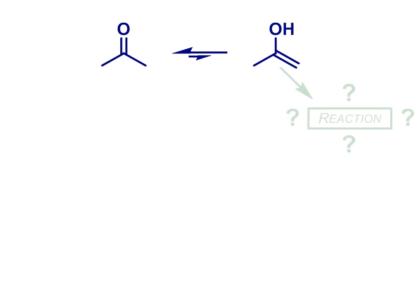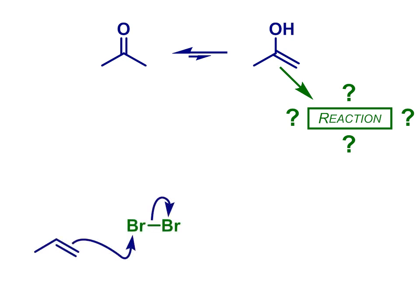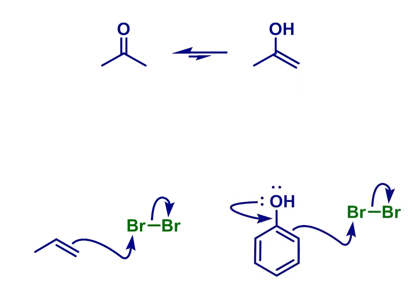So how do enols and enolates react? Well, let's think about how a carbon-carbon double bond in an alkene reacts. It reacts with electrophiles, of course, like bromine here. Similarly, this pi bond in the reaction of phenol with electrophilic bromine we've looked at previously. The pi electrons in both these examples are reacting with electrophiles. So enols and enolates do too. They react as nucleophiles with electrophiles via that carbon-carbon double bond in most situations.